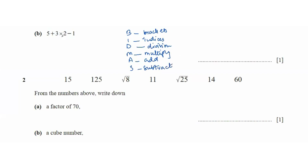Looking at our equation, we have addition, multiplication, and subtraction. According to BIDMAS, multiplication comes before addition and subtraction. So we're going to do 3 times 2 first. 3 times 2 is 6.